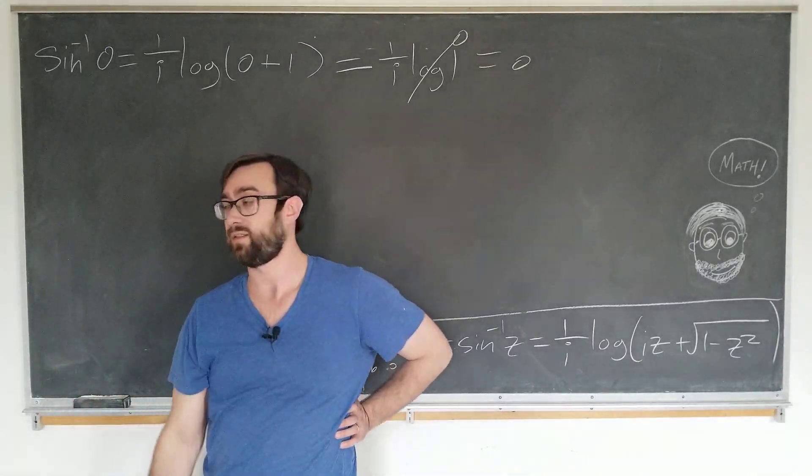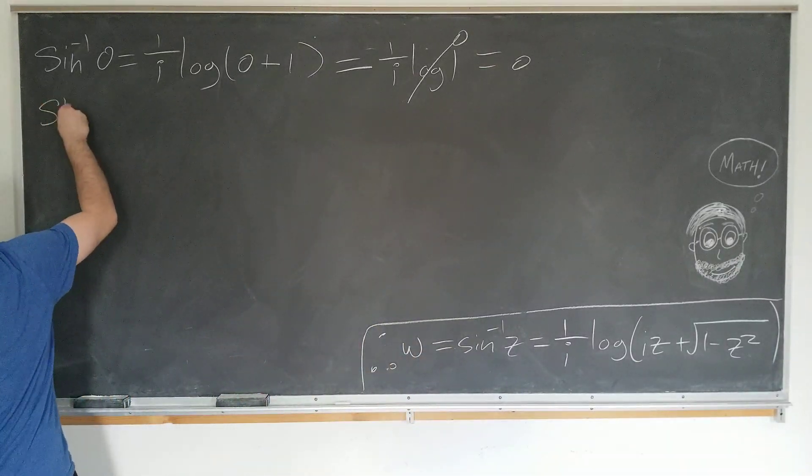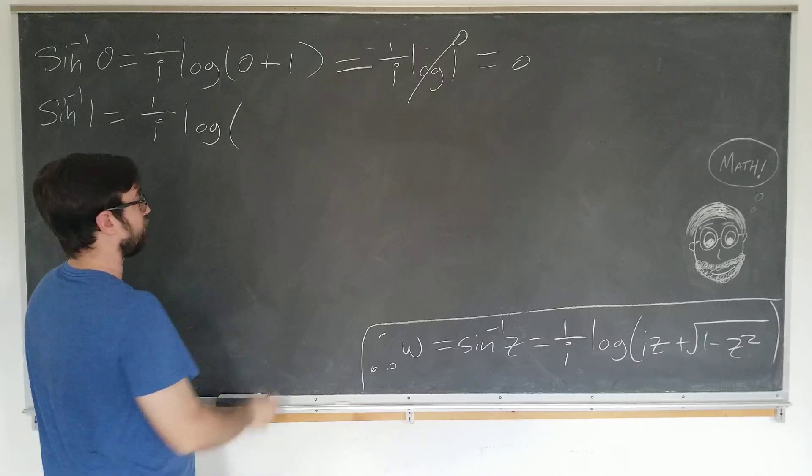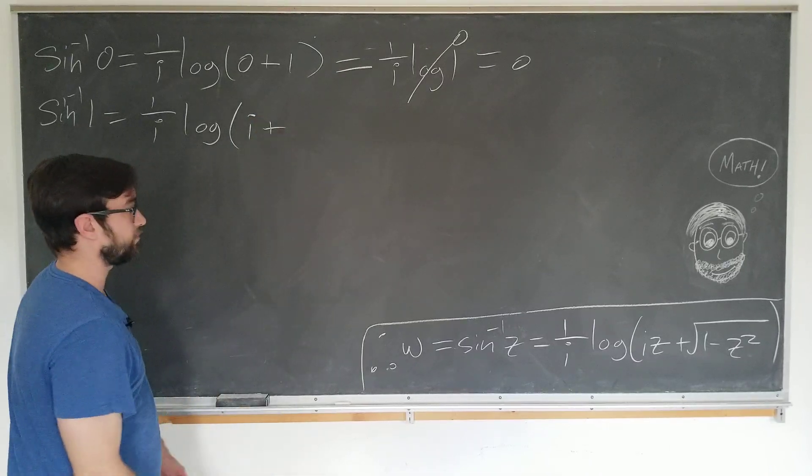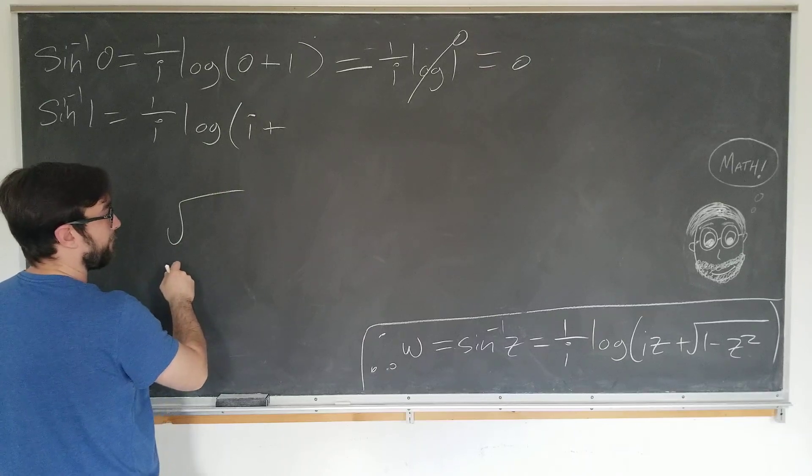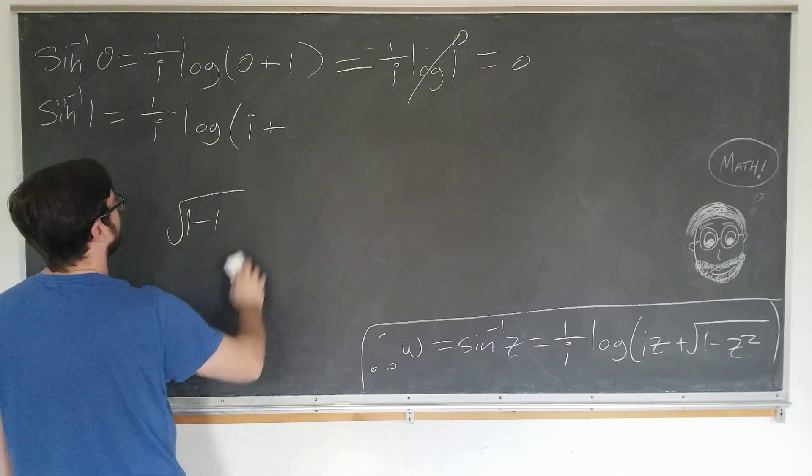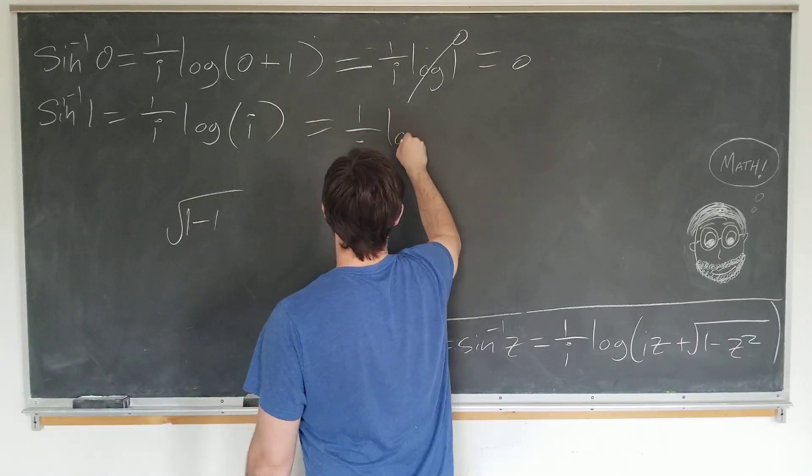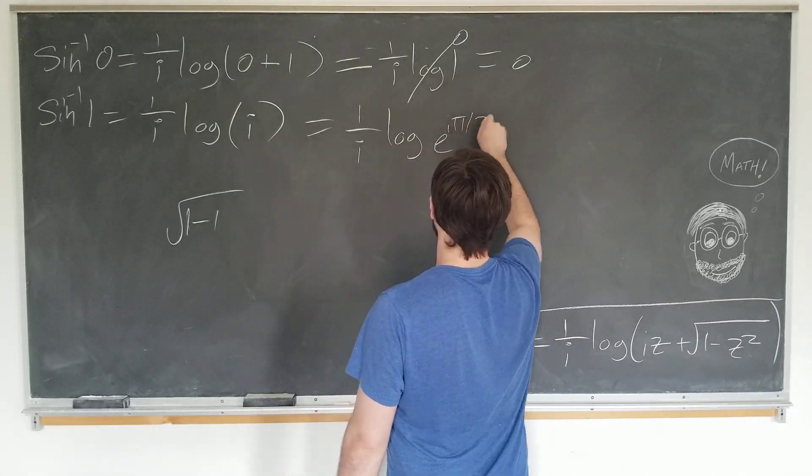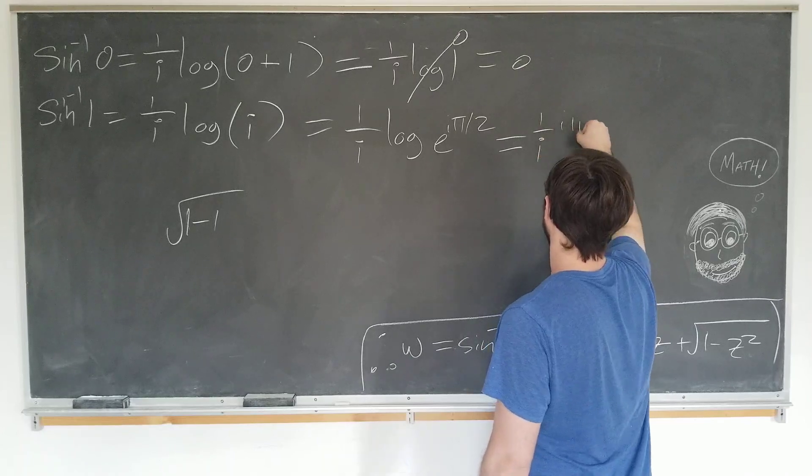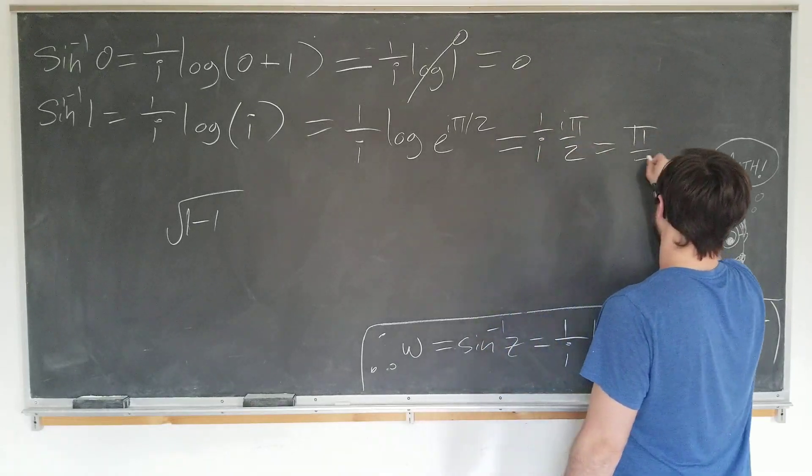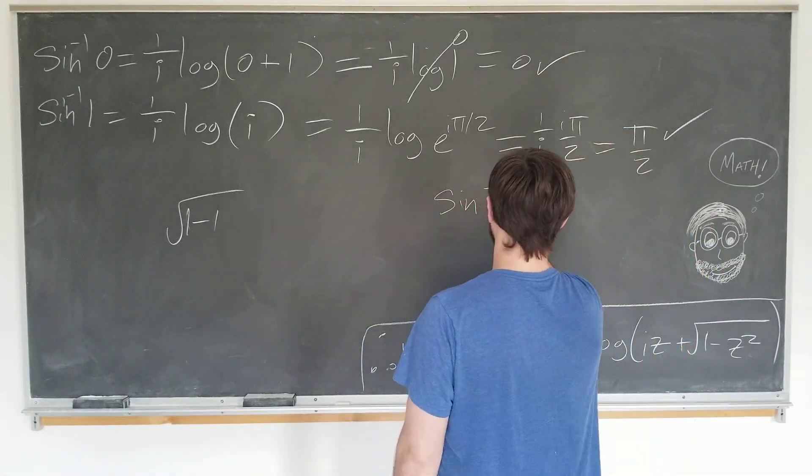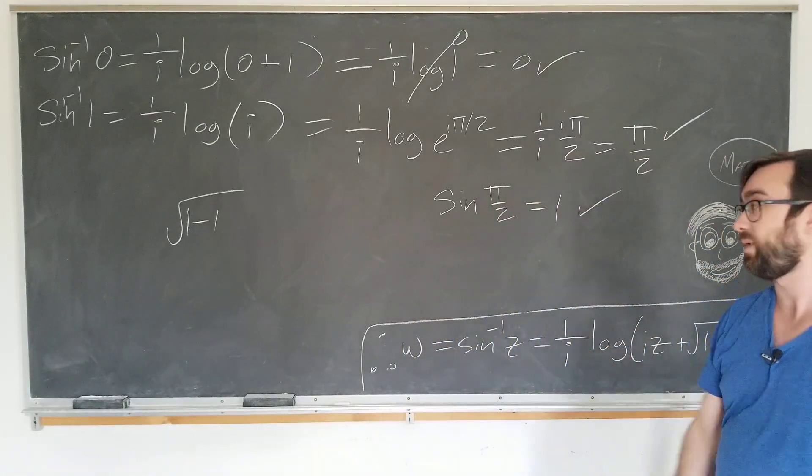Okay, next simplest example we can plug in is z equals 1. Inverse sine of 1 is 1 over i log of i plus the square root of 1 minus 1. Well, that one becomes 0, so that one actually does go away. And we can write log of i as log of e to the i of pi over 2. So it's 1 over i times i pi over 2, which is pi over 2. This is good, because sine of pi over 2 is equal to 1.